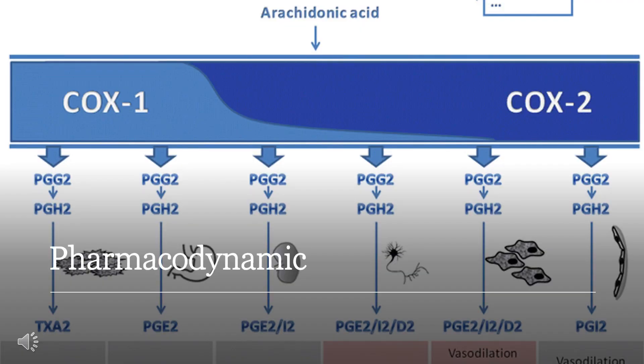Pharmacodynamics: Ketoprofen is a non-steroidal anti-inflammatory agent (NSAIA) with analgesic and antipyretic properties. Ketoprofen has pharmacologic actions similar to those of other prototypical NSAIDs, which inhibit prostaglandin synthesis. Ketoprofen is used to treat rheumatoid arthritis, osteoarthritis, dysmenorrhea, and to alleviate moderate pain.